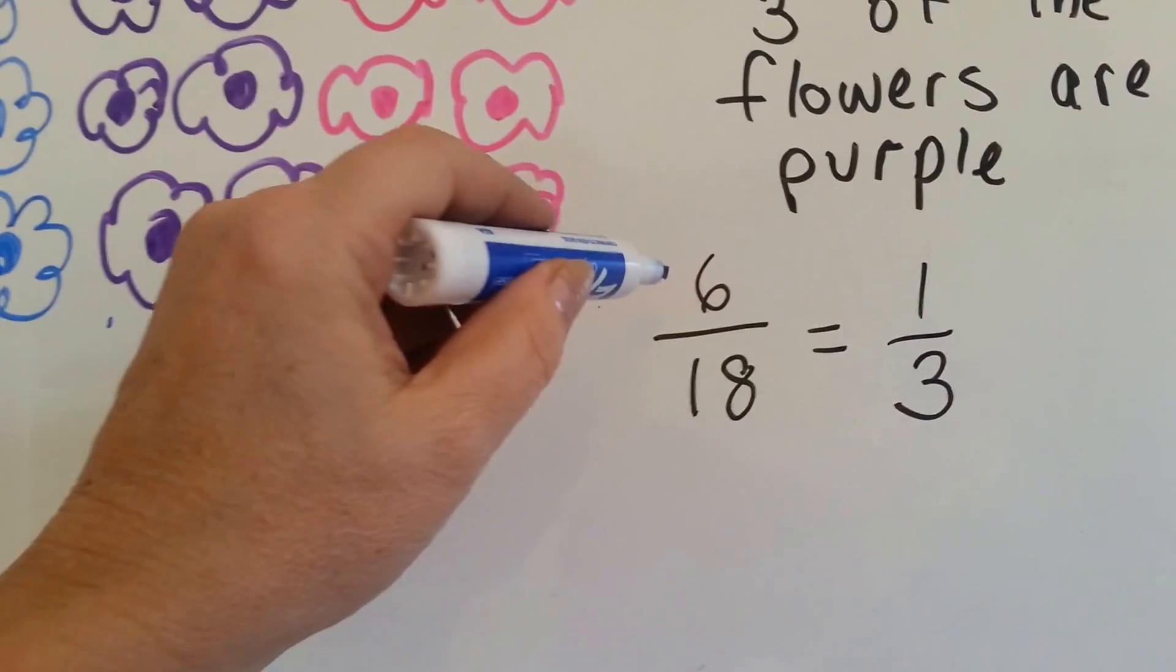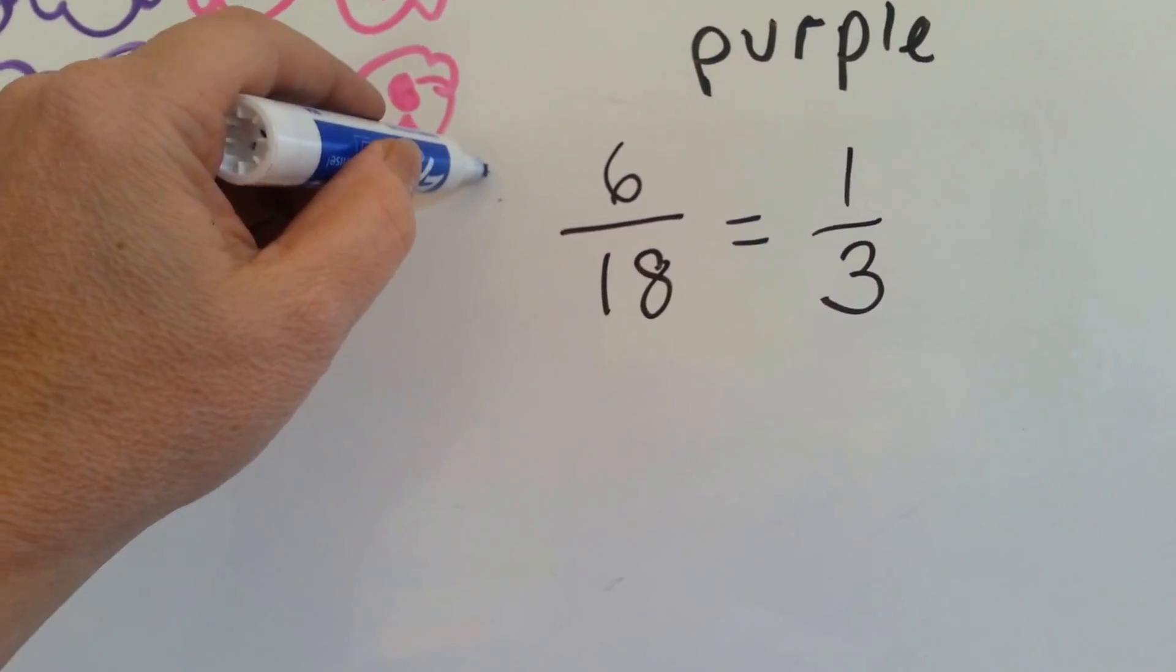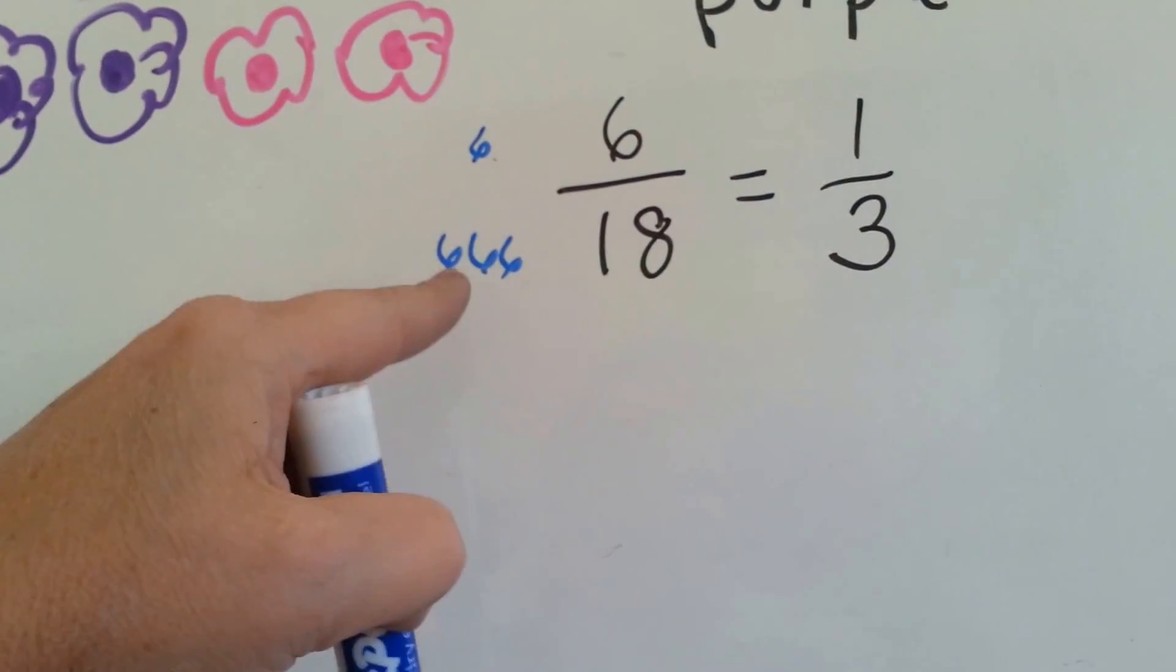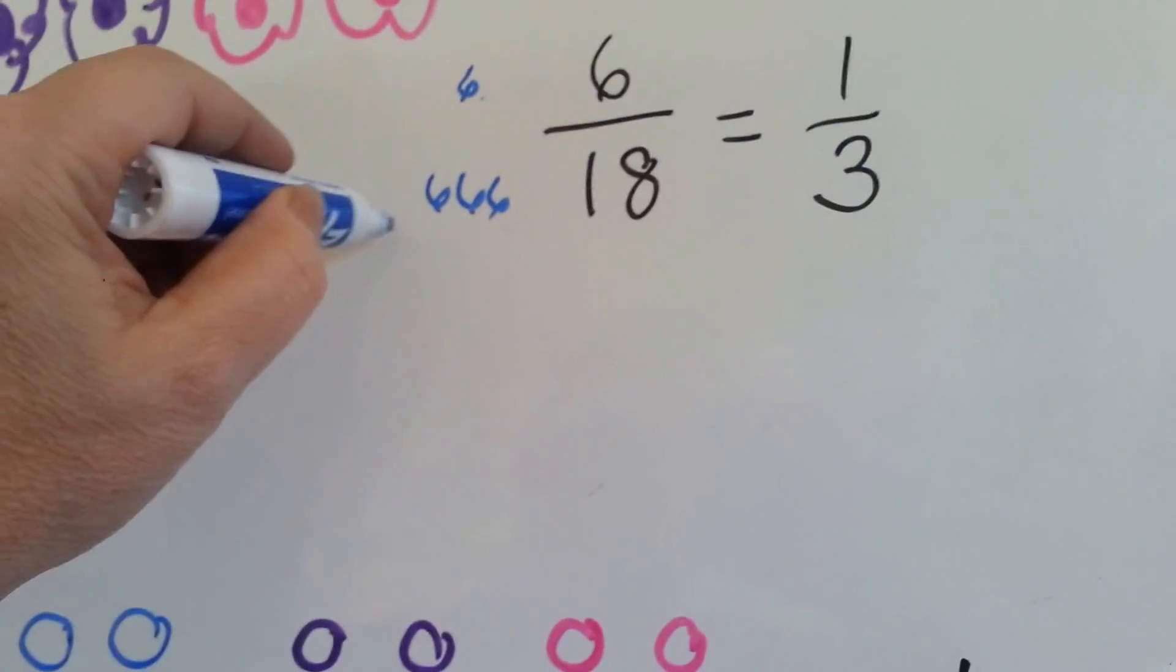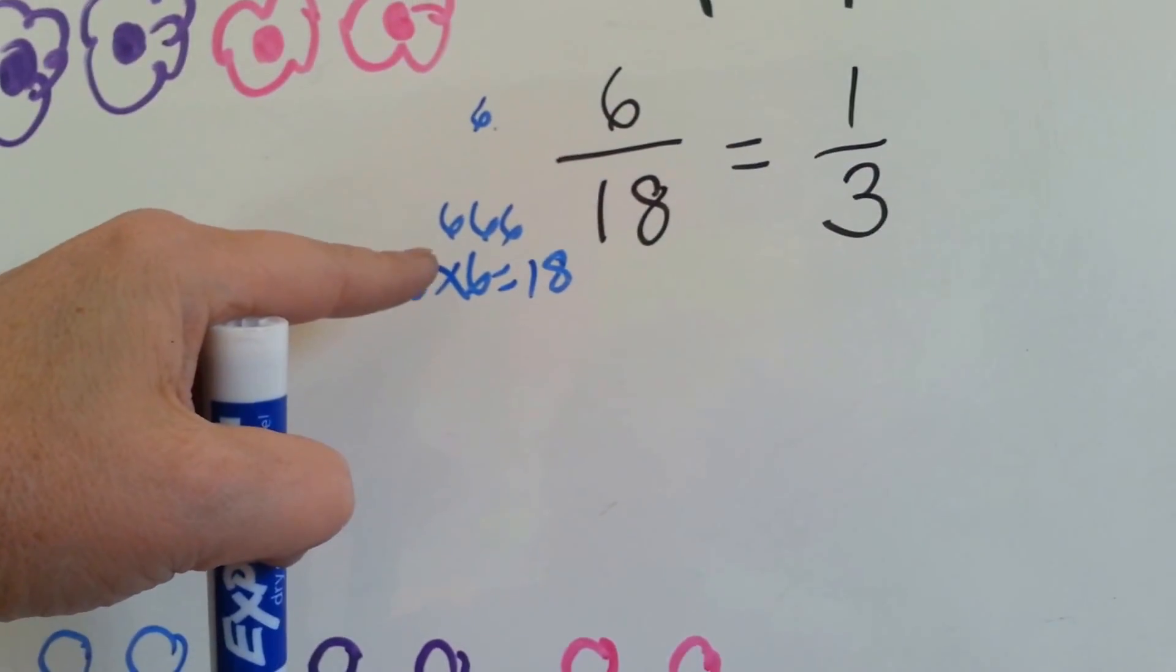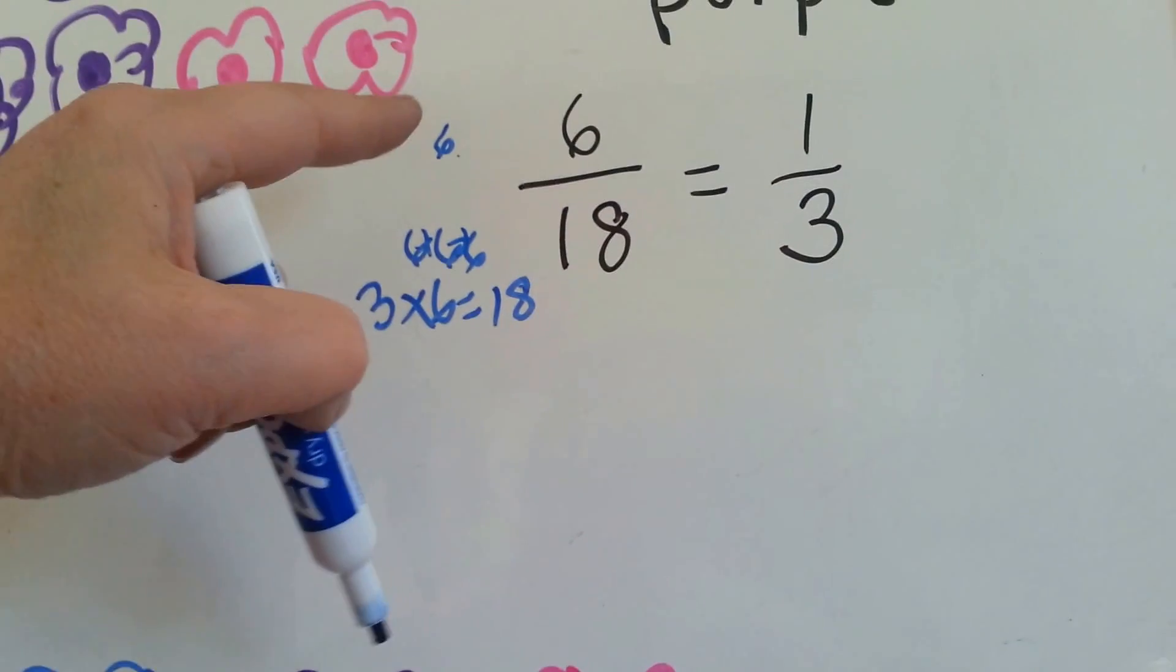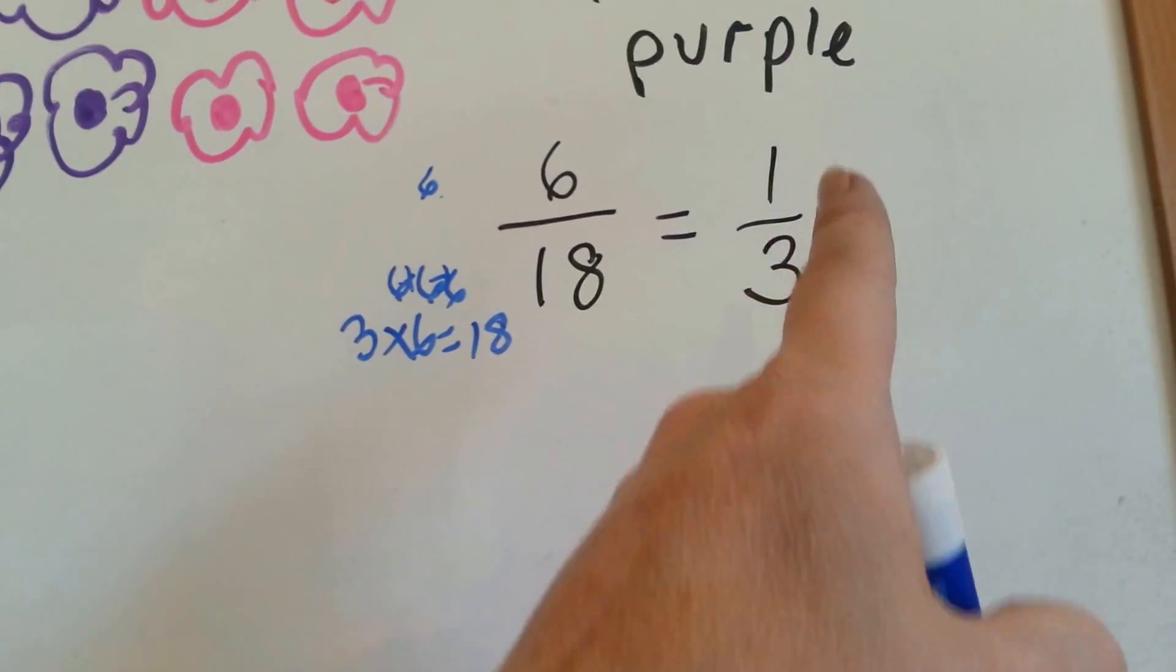One six can fit into eighteen three times. There's a six here, and there's a six, six, six here. Three of them. Because three times six equals eighteen. See that? So you've got a six plus a six plus a six, and there's only one here. So that gives you one-third.